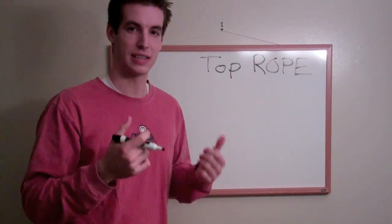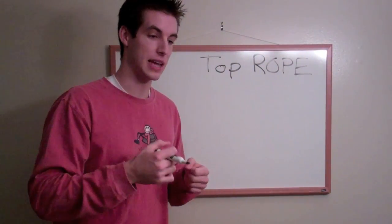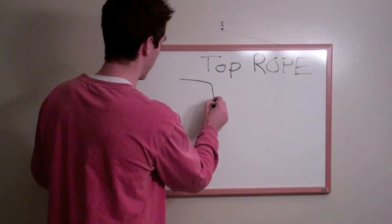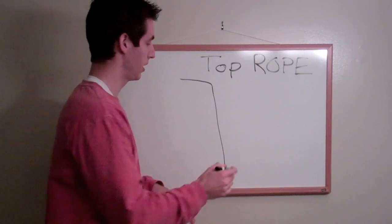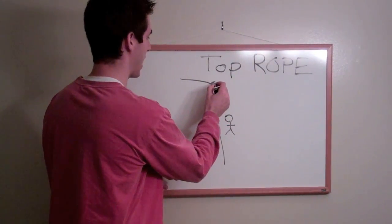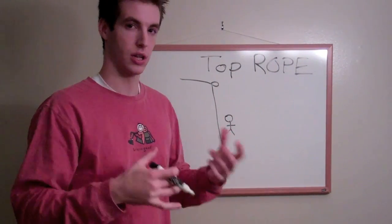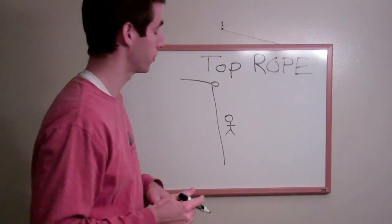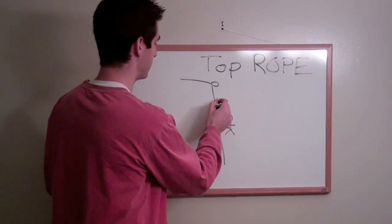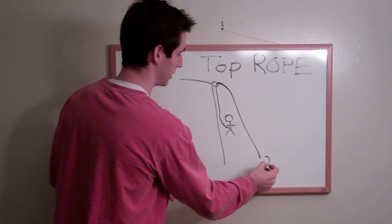The next form of climbing is top roping. Top roping is mainly the safest form of roped climbing. So if we had our cliff, and we have our climber climbing up, there would be an anchor at the top of the cliff, whether it's with a tree, or bolts, or some other natural anchor like a boulder. The rope is attached to the climber, goes up to the anchor, and then back down to the belayer who is standing on the ground.